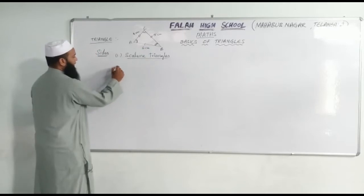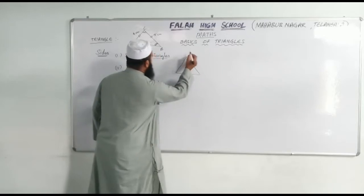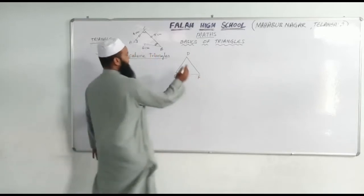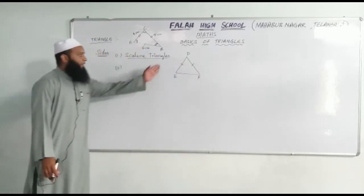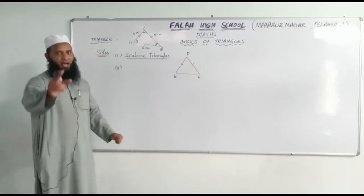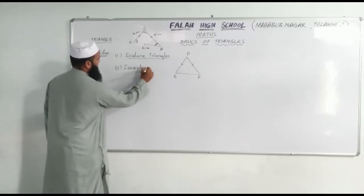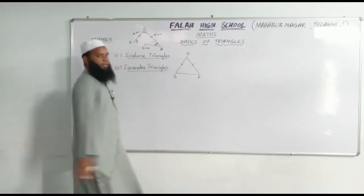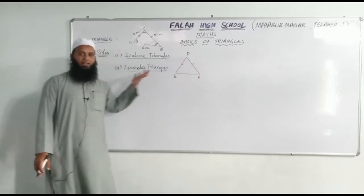First type. Now second type. I want to draw a triangle — suppose this is triangle D, E and F. I have taken these two sides as equal. If any two sides of a triangle are equal, then such type of triangles are called as isosceles triangles.